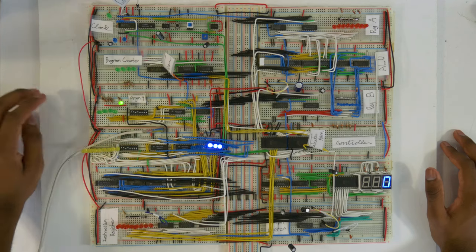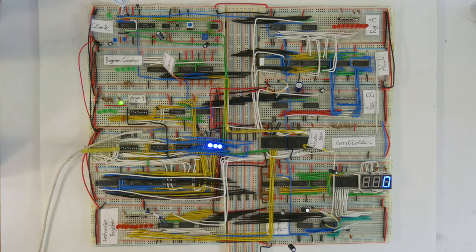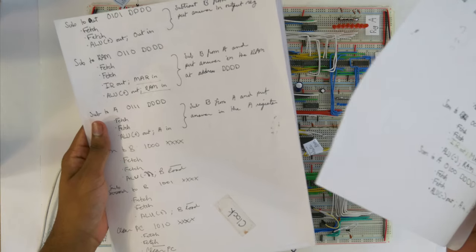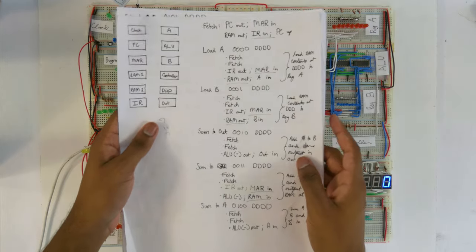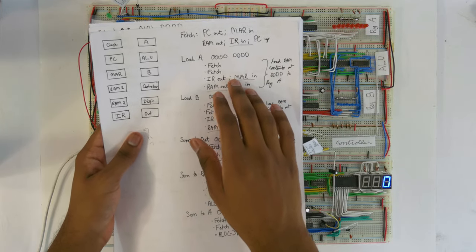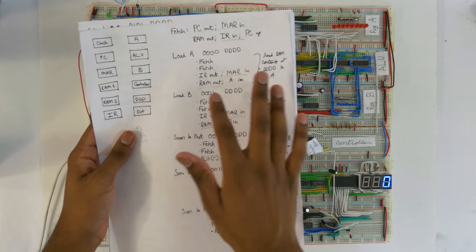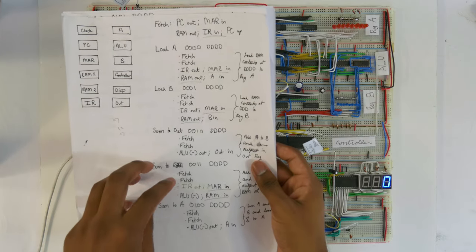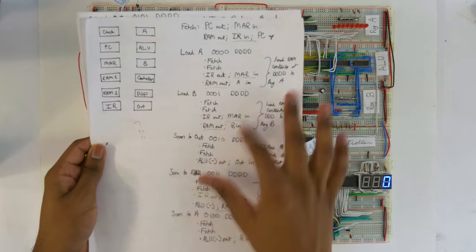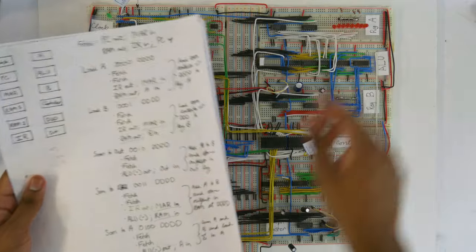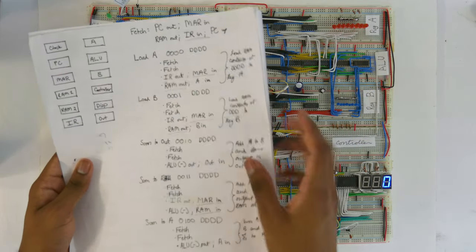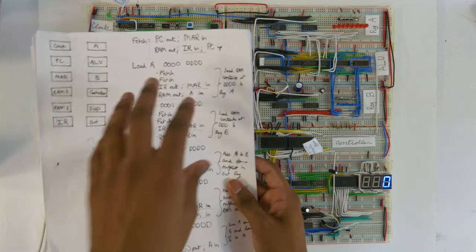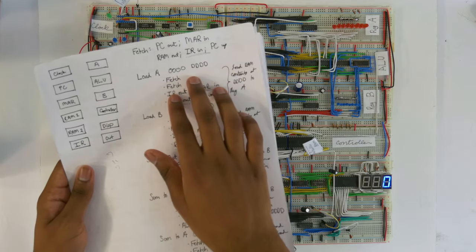Before we step through it, let's talk about how it actually does this. We can figure it out by looking at the instruction set, which is quite simple - there's only about 11 instructions. The first two microsteps of any instruction are going to be the fetch, because you have to get that instruction from memory and move it to the instruction register before you can start acting on it.